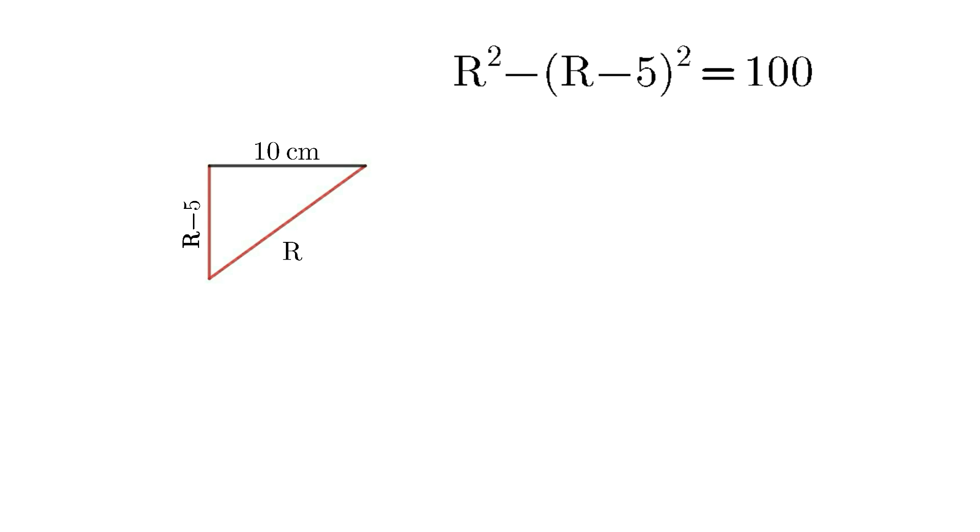R² - (R-5)² = 100. That is, R² - R² + 10R - 25 = 100. So 10R = 125, or R = 12.5 cm.